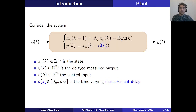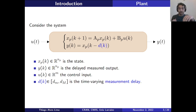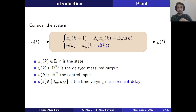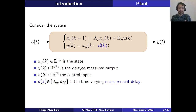In this work we study a specific plant: a linear system where the state equation is linear and in the output we have the measurement of the states delayed by a time-varying delay d(k), which is lower bounded by d_m (small) and upper bounded by d_M (big). This represents, for example, the process of transmitting measurements through a network where a package of information may arrive with delay, and can even arrive later than a package sent after it — this is the nature of time-varying delays.